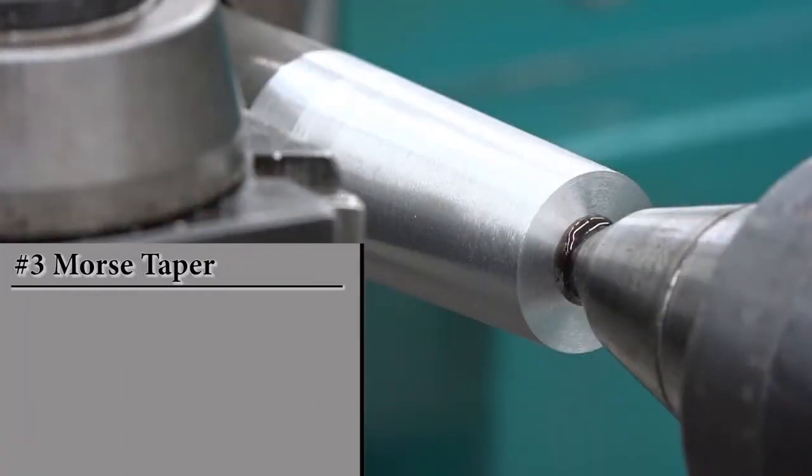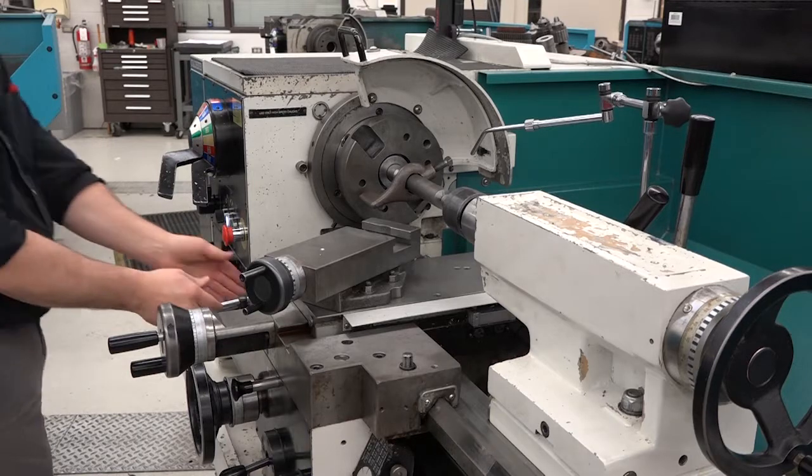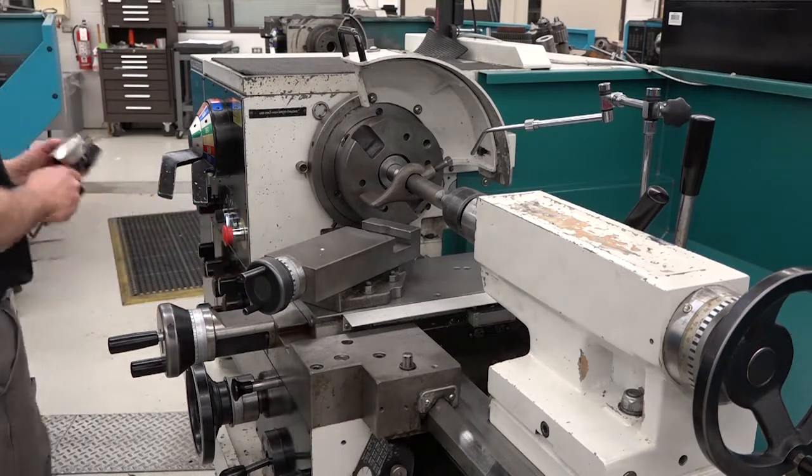A number 3 Morse taper requires a taper of 0.0502 TPI. We move the carriage one inch. We need to divide the required taper per inch by two because we're measuring the radius and not the diameter or the actual movement of the indicator. Some further adjustments to the tailstock may be needed to get the taper correct.